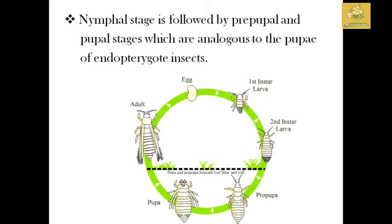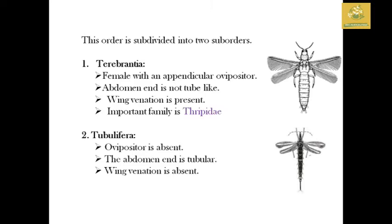There are two suborders in Thysanoptera. The first is Terebrantia, and the second is Tubulifera. In Tubulifera, the appendicular ovipositor is absent and there is a tube-like structure with wing venation present.